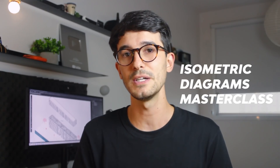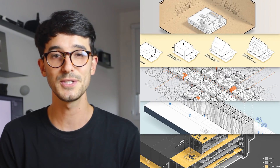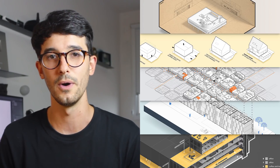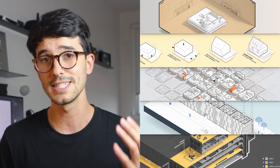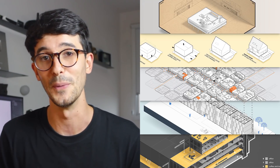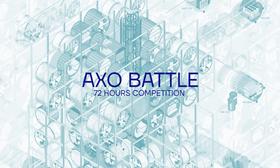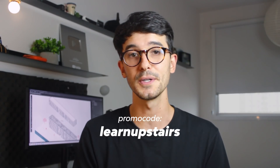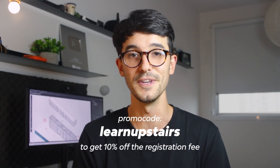The drawing we're going to use is from the isometric diagrams masterclass — a premium course on how to create axonometric diagrams, more precisely isometric diagrams, using mostly Illustrator but a bit of Photoshop as well. It goes from basic to advanced with six-plus hours of premium lessons — links down below. Also, I'm going to be part of the jury for the 72-hour EXO battle from Non-Architecture, an upcoming competition focused on one drawing only: the axonometric. It's a great opportunity to expand your portfolio and practice new skills. Use promo code LEARNUPSTAIRS to get 10% off the registration fee — links down below.